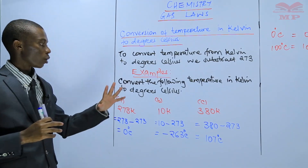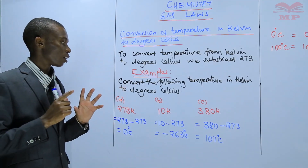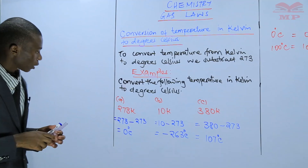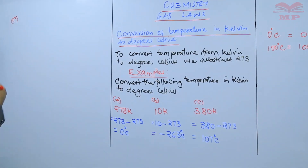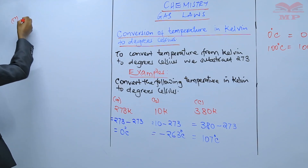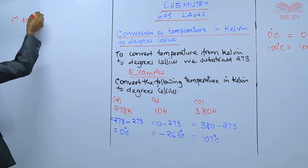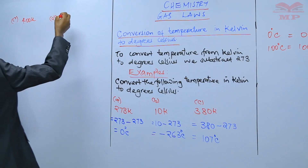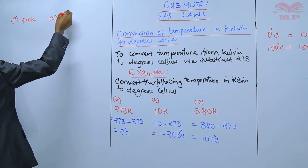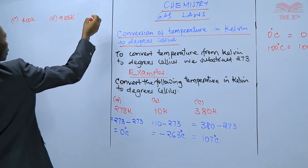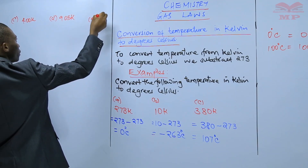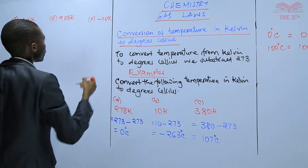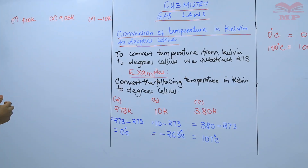I want to give you some more examples so that you understand better. Convert the following temperatures from Kelvin to degrees Celsius: 400 Kelvin, 905 Kelvin, and negative 10 Kelvin.